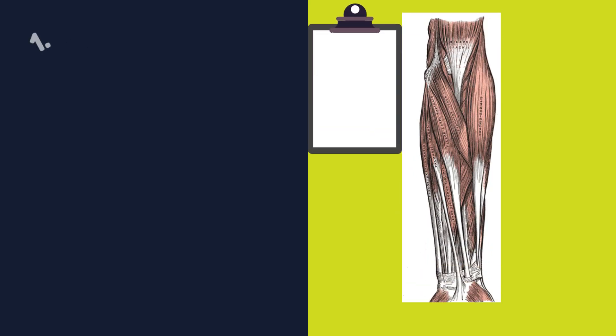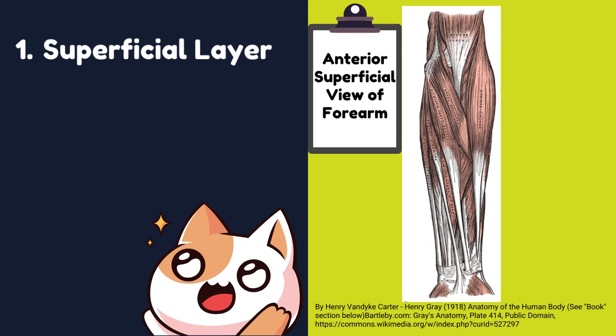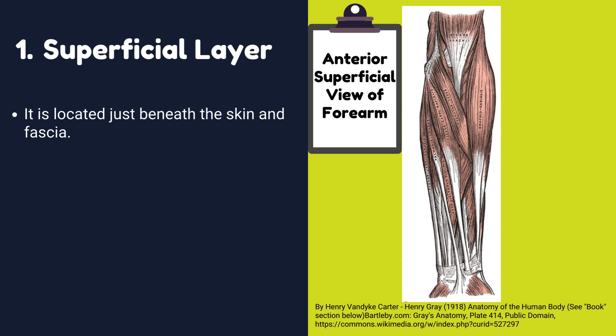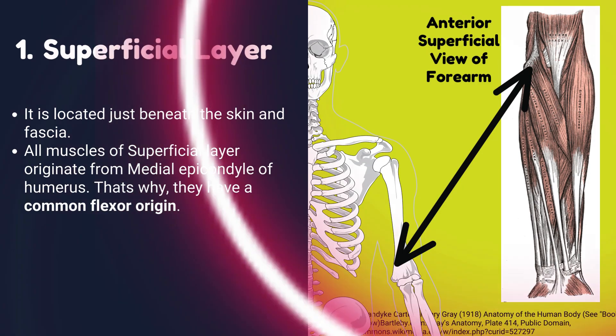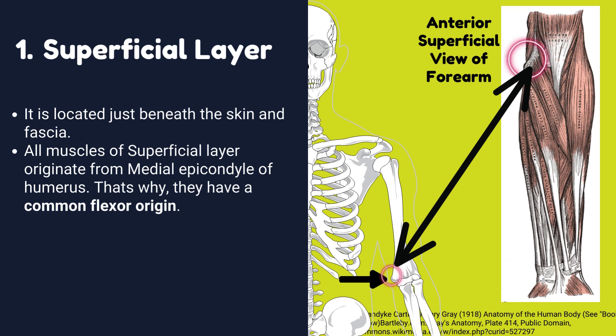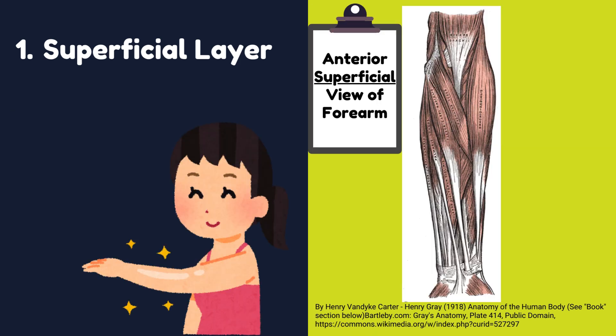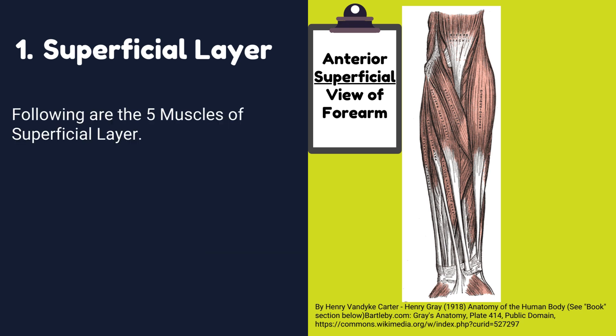First, we will discuss the superficial layer of the anterior compartment. The superficial layer is located just beneath the skin and fascia. All muscles of the superficial layer originate from the medial epicondyle of the humerus. That is why they have a common flexor origin. Following are the five muscles of the superficial layer.